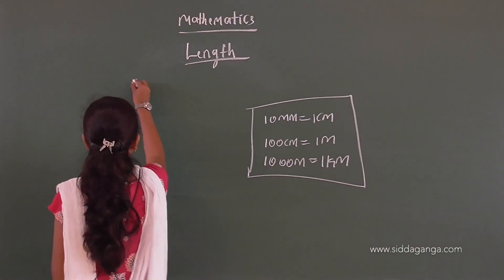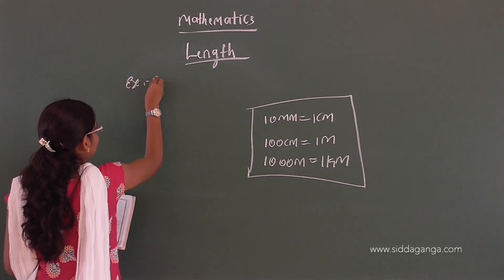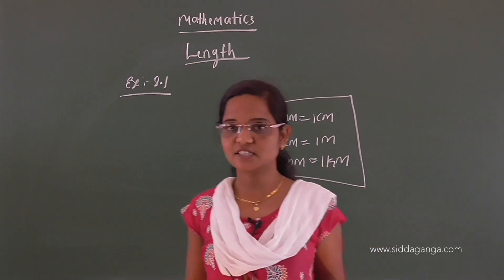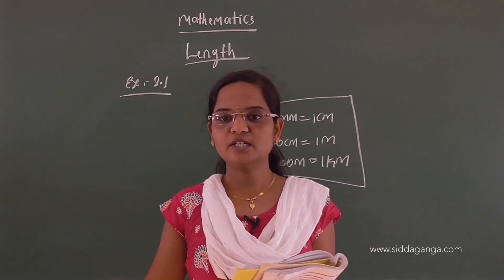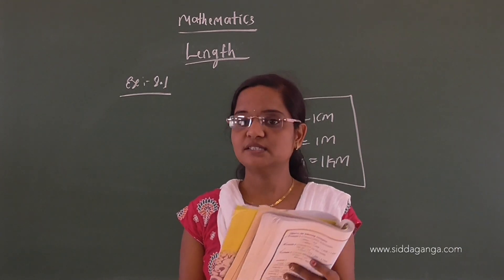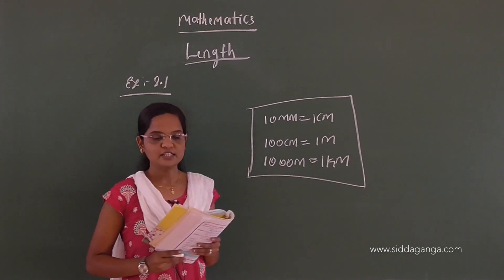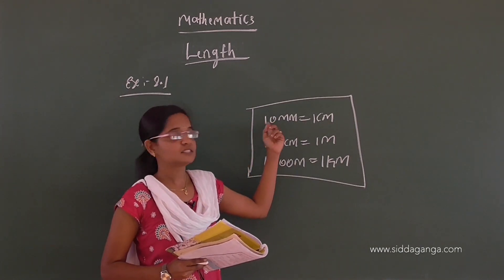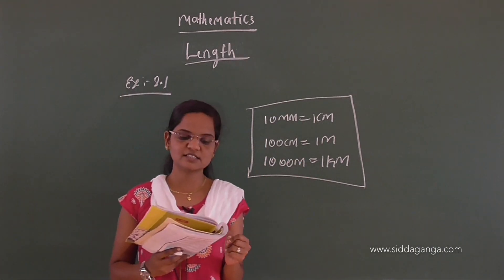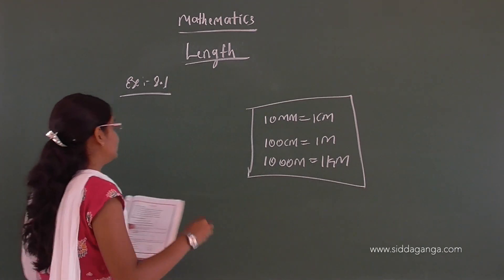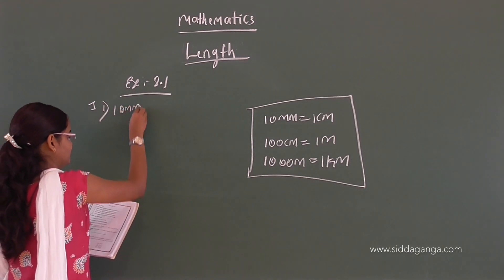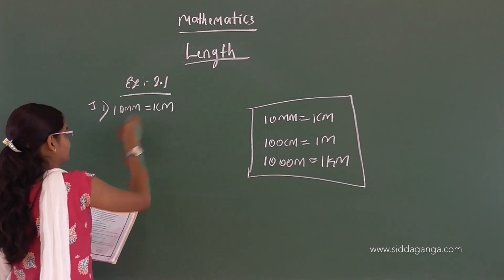Exercise 8.1 — Answer orally. No need to write. How many millimeters make 1 centimeter? Observe this relation. Based on this relation, you can easily say 10 millimeters make 1 centimeter. So the first question answer is: 10 millimeters make 1 centimeter.